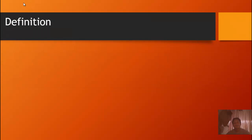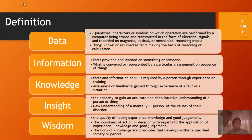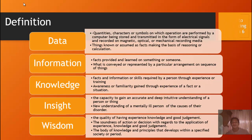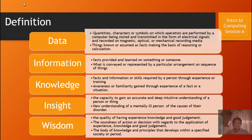Definition: What is data? Data are quantities, characters, or symbols on which operations are performed by a computer, being stored and translated in the form of electrical signals and recorded by magnetic, optical, and mechanical recording means. These are assumed as facts making the basis of reasoning or calculation.